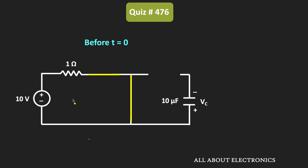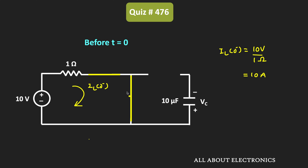At time t equal to 0 minus, let us find the current through the inductor. This IL(0-) is equal to 10 V divided by 1 Ω, which is equal to 10 A. So at time t equal to 0 minus, the current through the inductor is 10 A. Once the switch is opened, at time t equal to 0 plus also the same current will flow through the inductor, because the inductor opposes the instantaneous change in current.